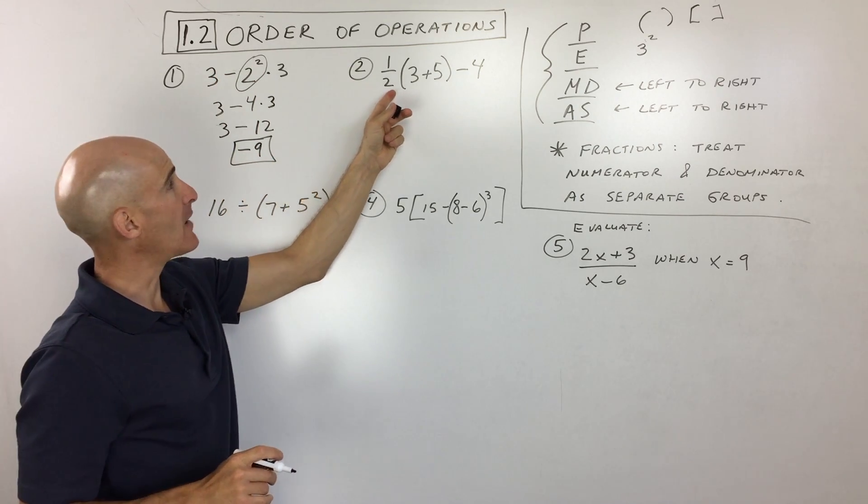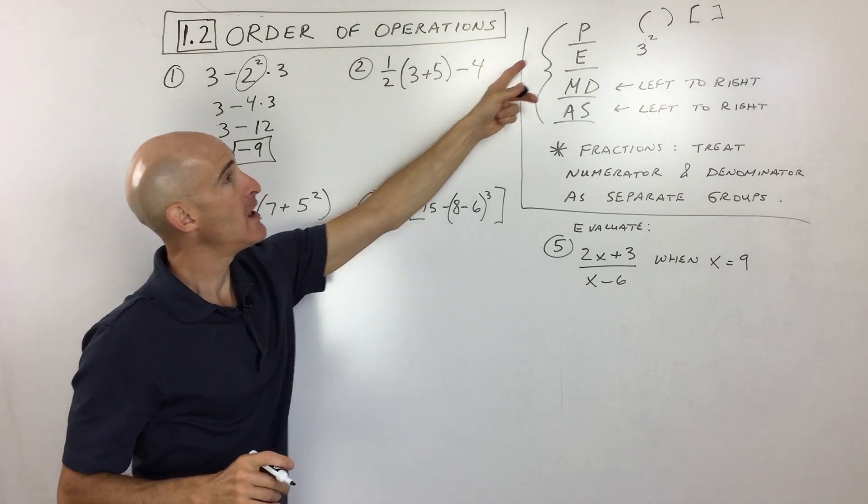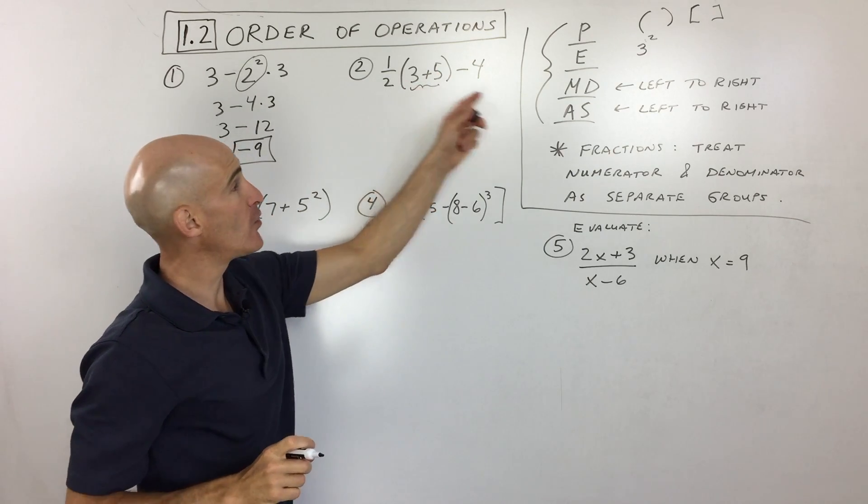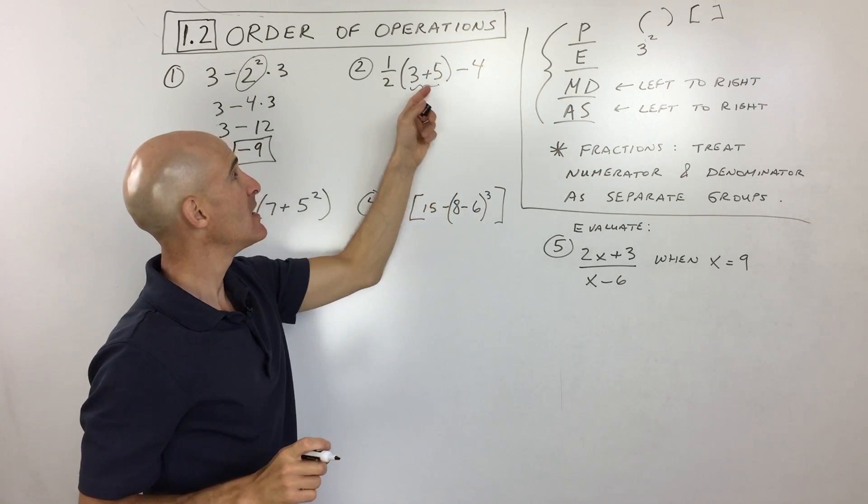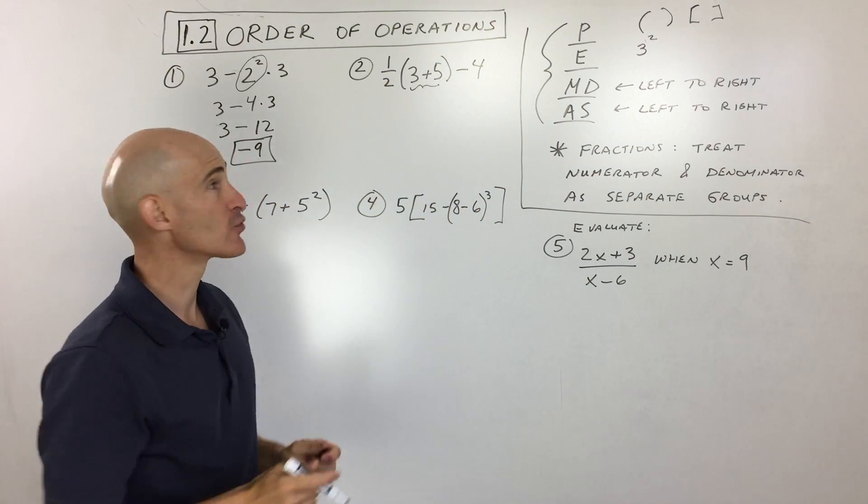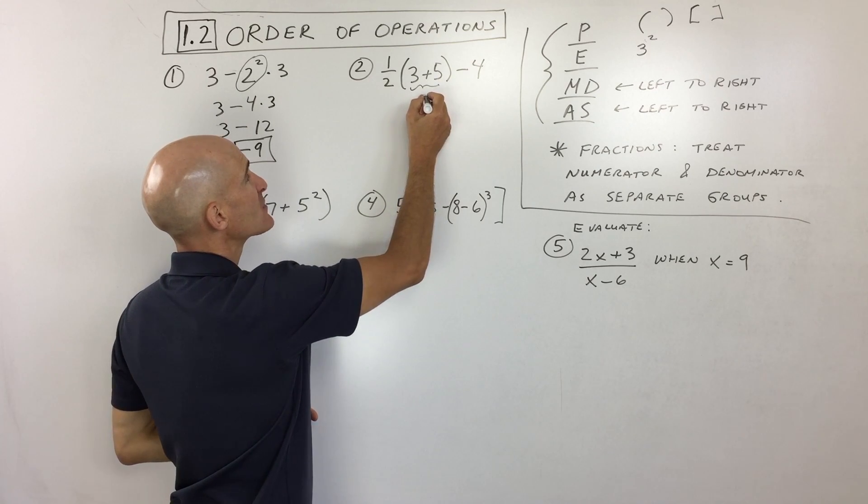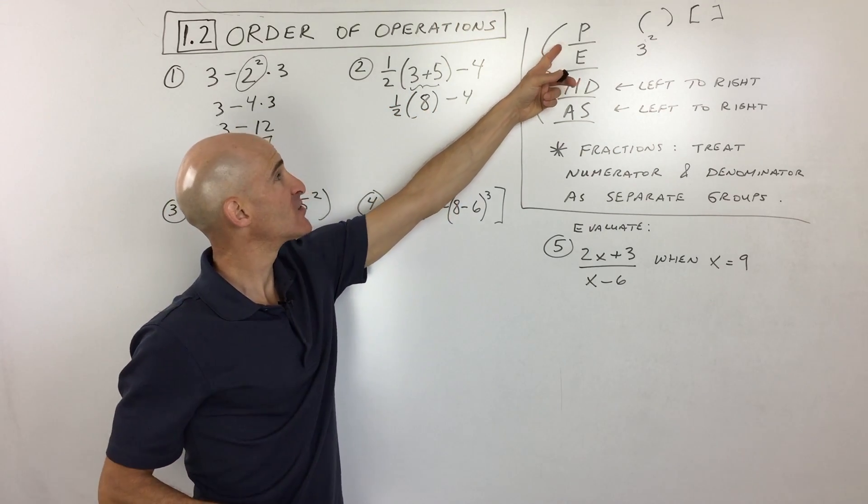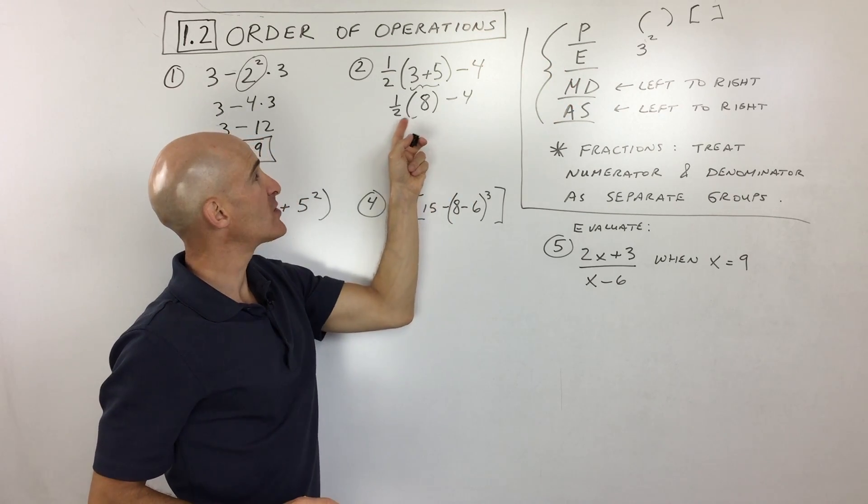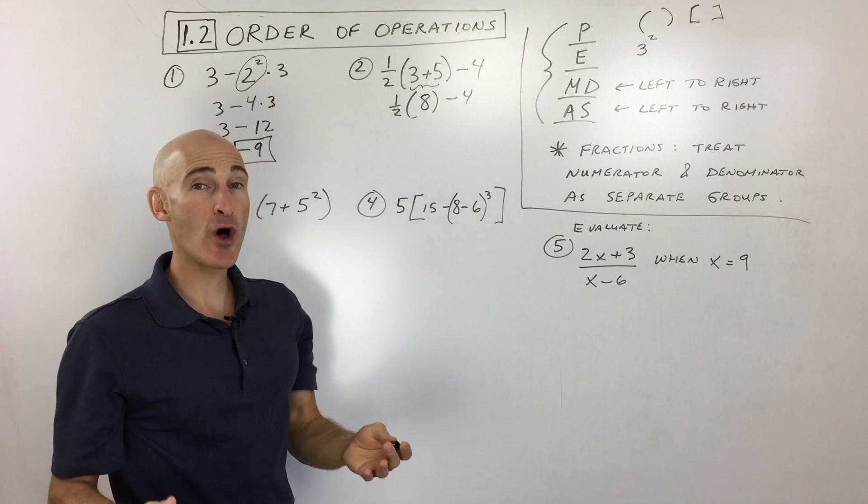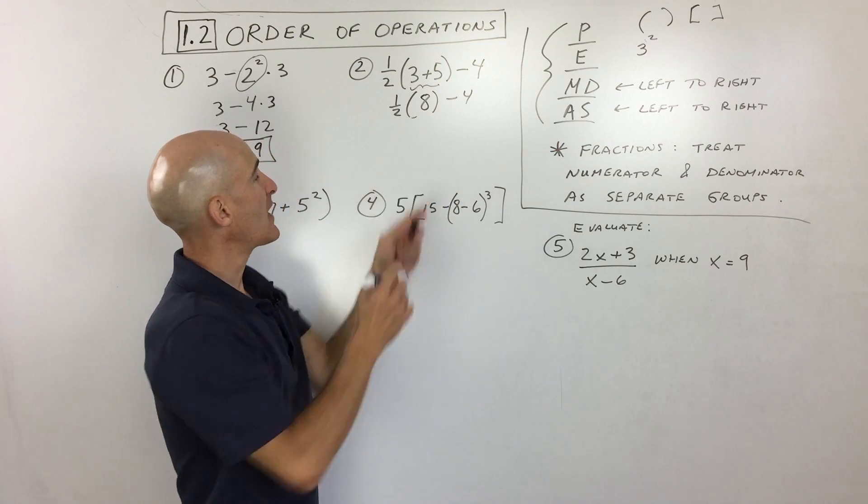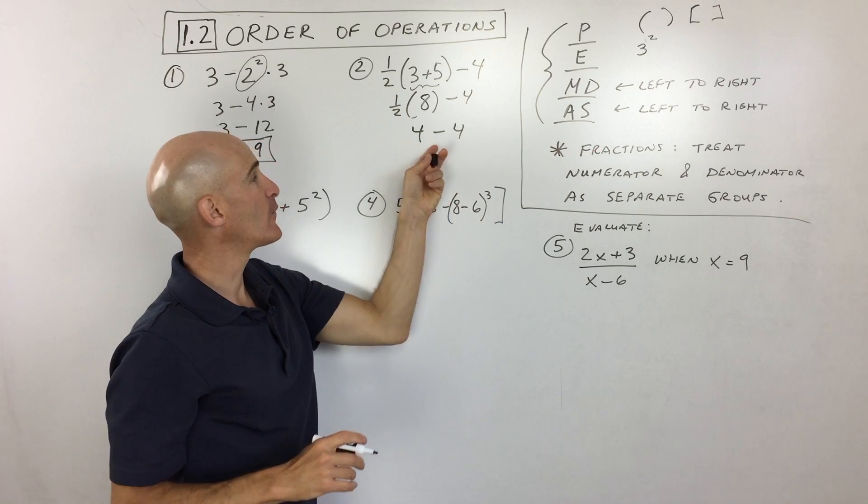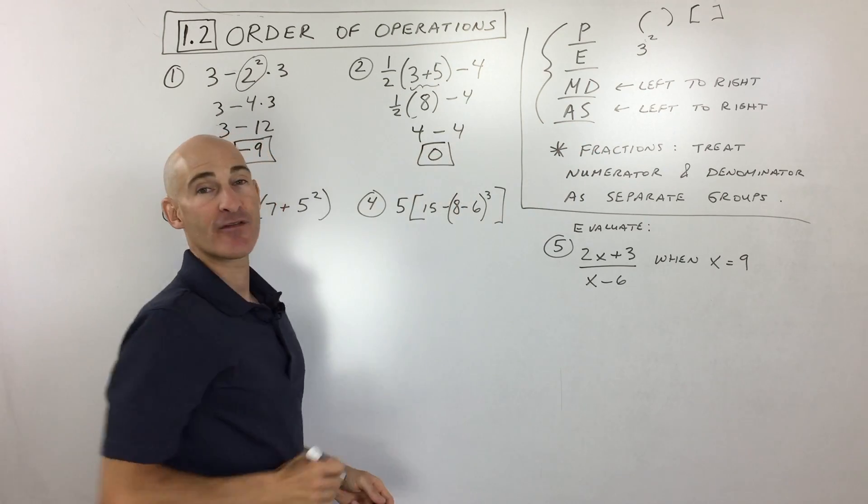Let's go to number two. We've got ½(3+5)-4. There's parentheses, and that's the most important thing. We do what's inside the parentheses first. Even though addition normally comes last, we treat the parentheses as a group first. 3+5=8. Bring down the ½ and the -4. No exponents. But the ½ and 8 are right next to each other, so they're multiplied together. ½·8=4. Lastly, 4-4=0. That's our final answer.